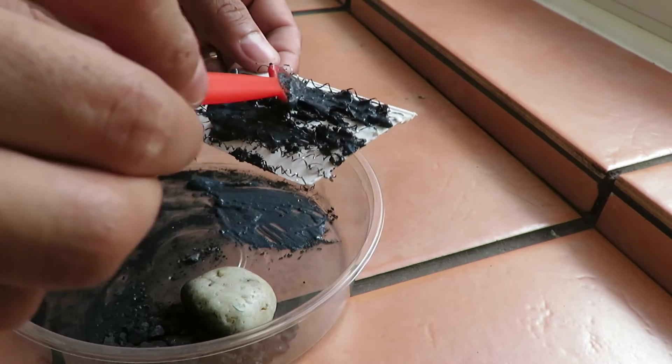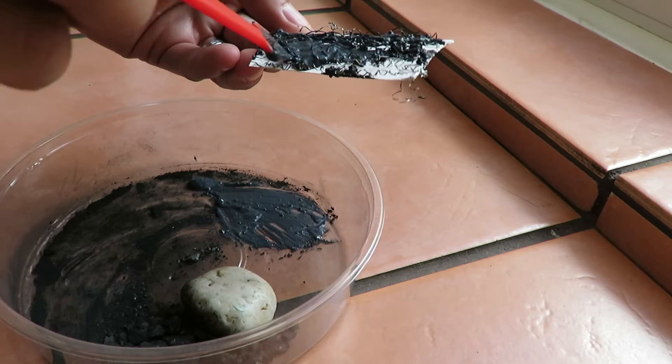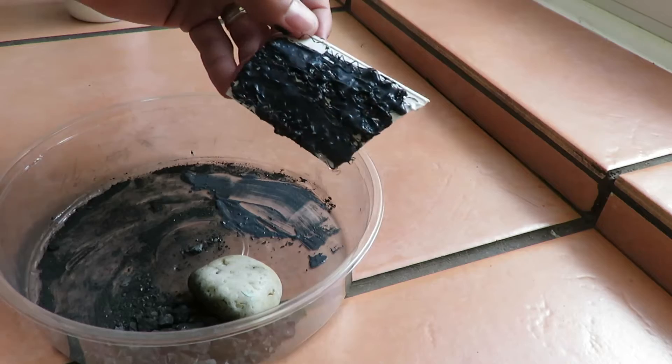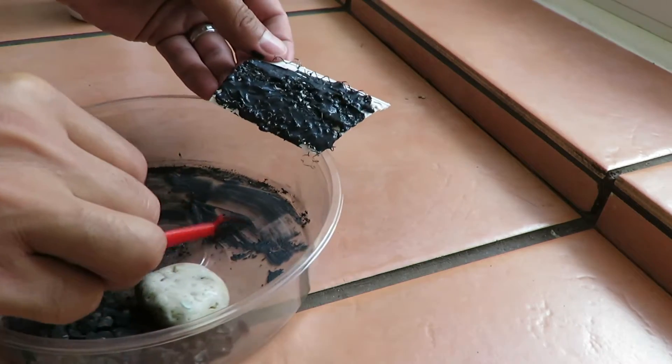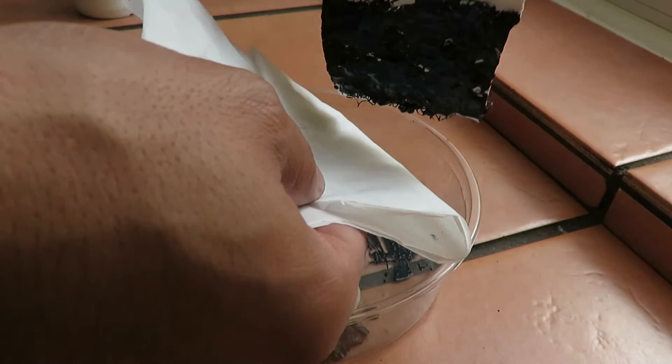We call it a current collector. Whatever electrons the carbon obtains will be collected by this wire. Make sure you completely cover it with the carbon paste, and bring a small tissue or napkin and put it beneath it.